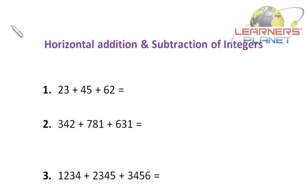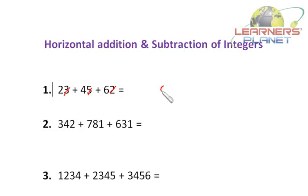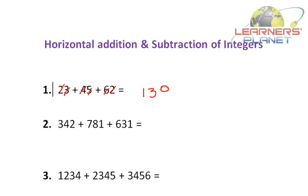Let's begin with our first problem: 23 plus 45 plus 62. To avoid visual confusion, just cut the numbers you are going to add. So it's 3 plus 5 is 8, and 8 plus 2 is 10 — put a 0, carry 1. Then 1 plus 2 is 3, 3 plus 4 is 7, 7 plus 6 is 13. So very fast, very simple — I didn't copy the problem anywhere and I calculated it horizontally.